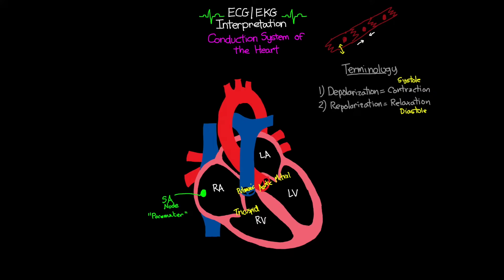When that action potential happens, it spreads out to all of the surrounding cells, causing all of those cells to depolarize as well. Most cells in the heart will only depolarize when a neighboring cell depolarizes, which is what makes these SA node cells so special — they depolarize entirely by themselves. This depolarization happens at a pretty consistent rate: the cells in the SA node will depolarize on their own at a rate of about 60 to 100 times per minute.